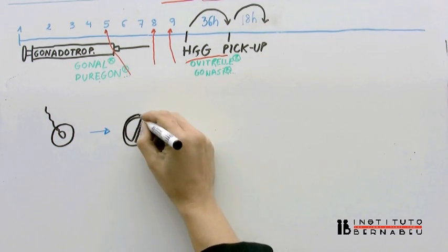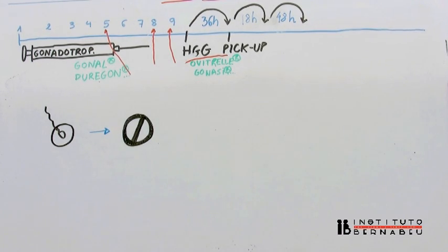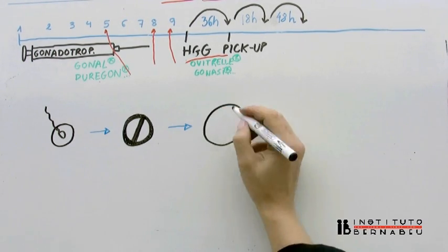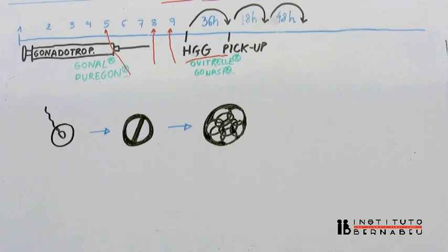After 18 hours, we find out the number of eggs showing the first signs of fertilization. 48 hours later, on day three, the embryos now have between seven and nine cells, and depending on their quality, number, and quantity, the time of transfer is decided.